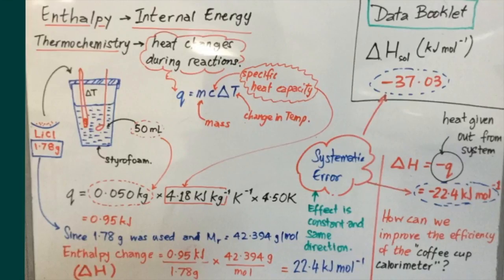Here, we place 1.78 grams of lithium chloride into 50 milliliters of water in the coffee cup. And once this is done, it is possible to calculate the heat changes in the system using this equation here.